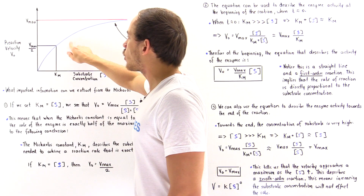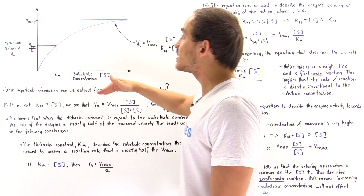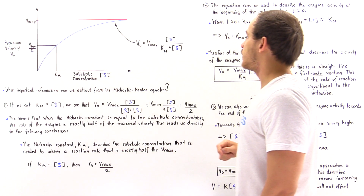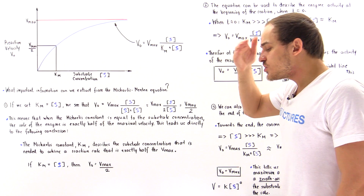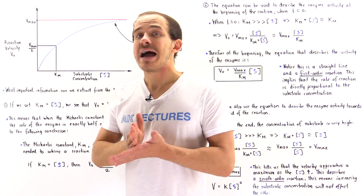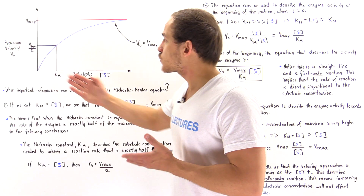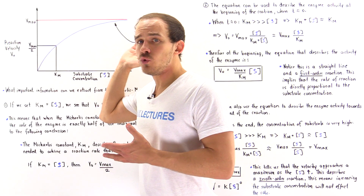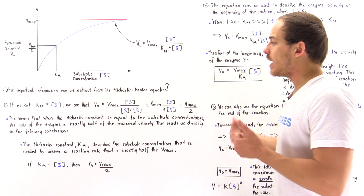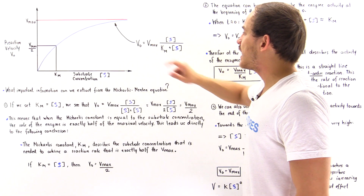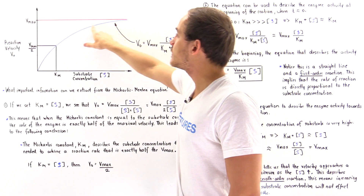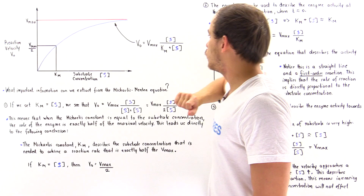Notice the blue curve is never going to pass that Vmax value. We were also able to derive the mathematical expression that describes the blue curve, known as the Michaelis-Menten equation. This equation describes this blue curve here.